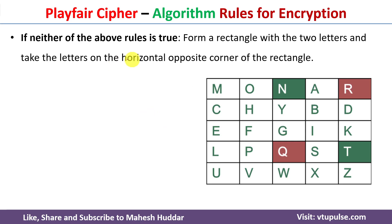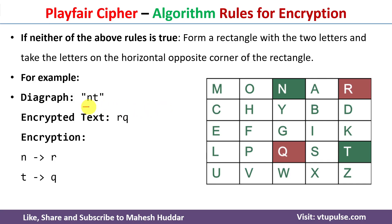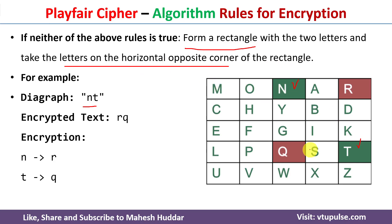The third encryption rule: if the two letters of the digraph are not in the same row or same column, we form a rectangle and take the letters on the horizontally opposite corners. At the time of encryption, we go in the clockwise direction. For example, digraph NT — N is present here and T is present here, not in the same row or column. We form a rectangle, and going clockwise, N is encrypted as R and T is encrypted as Q. So NT is encrypted as RQ.